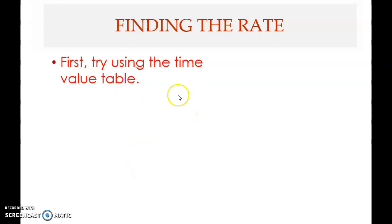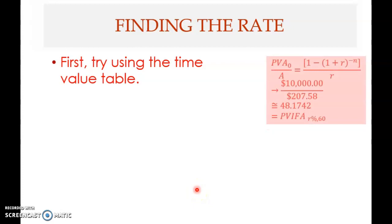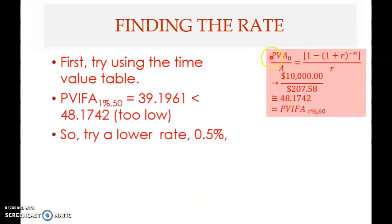Welcome back. We are trying to solve for the rate by using the trial and error method, but first we try using the time value table. The present value of annuity is ten thousand divided by the payment you make every month, which is 207.58. This value must be equal to the present value interest factor annuity, r percent, 60 periods.